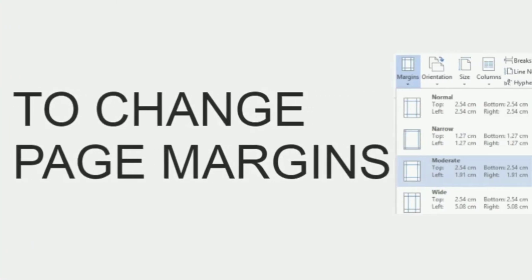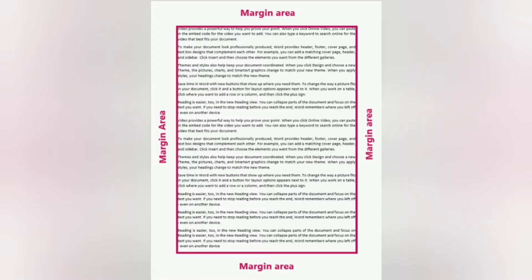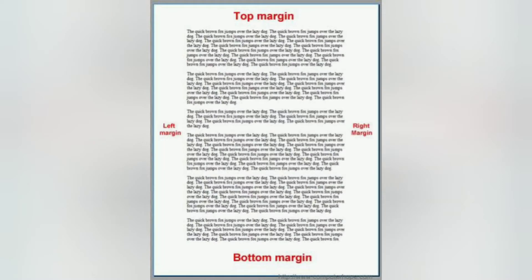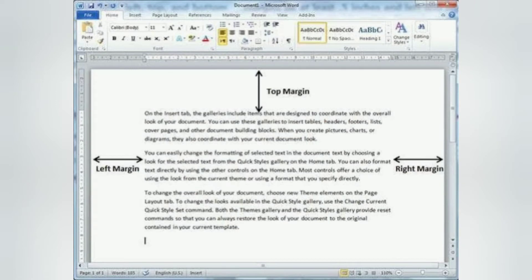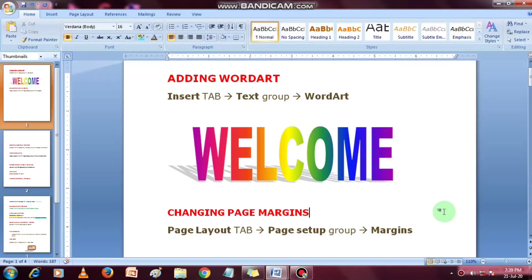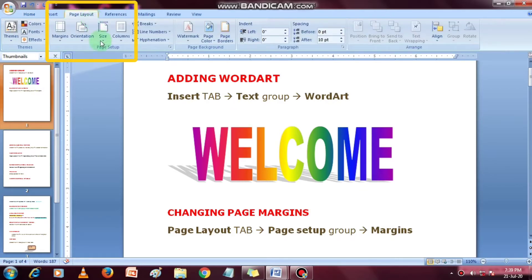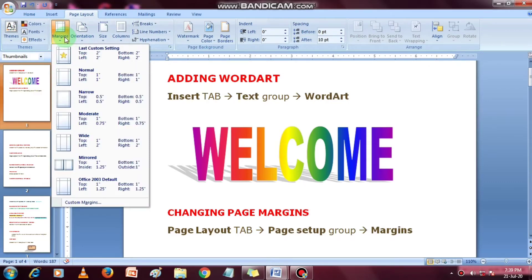How to change page margins in MS Word. The margin is the space between the text and the border of a document. By default, it is a 1-inch space. Depending on your needs, it can be changed by the following steps. Select the Page Layout tab. In the Page Setup group, click the Margins command. A list of margins appears. Select the desired margin with a left click.